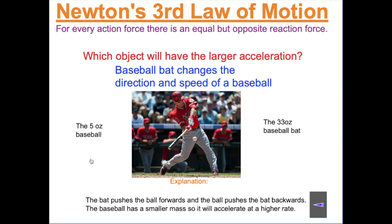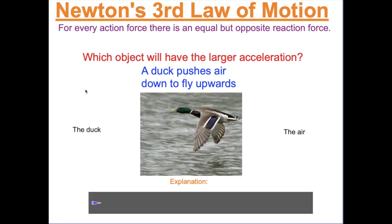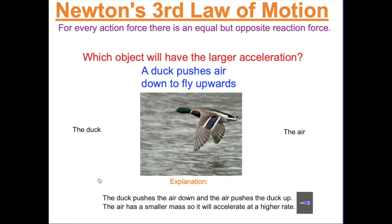The baseball has a huge acceleration — it may be moving toward the catcher at 100 miles an hour and leave the bat going the opposite direction at 100 miles an hour in a fraction of a second. That's a huge acceleration. The baseball bat does slow down a little, but not as much as the baseball. When a duck is sitting on the ground, gravity pulls it down and the normal force from the ground holds it up. But when the duck starts to fly, it pushes air down and the air pushes back up on the duck. The air has less mass than the duck, so the air has the higher acceleration.